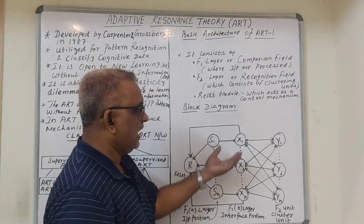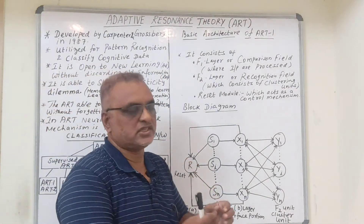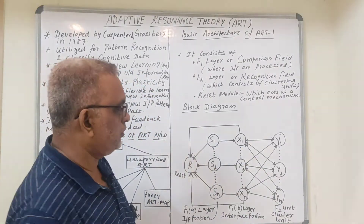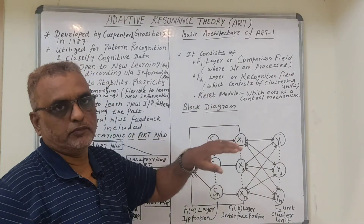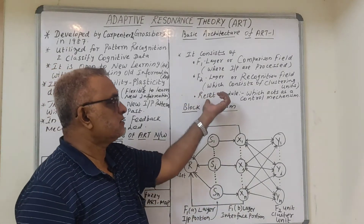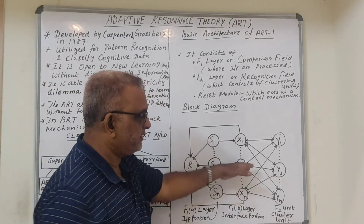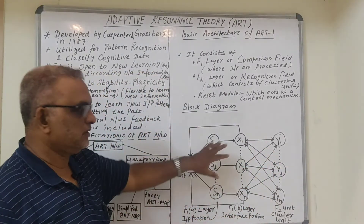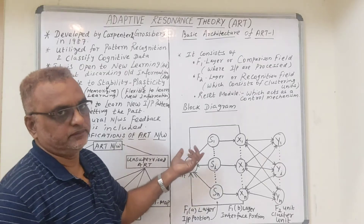The inputs are compared with the clusters in F2, and if the best match is found, that input is connected with the corresponding output pattern or cluster. Otherwise, the reset module performs a control action — it verifies whether the input patterns match the clusters, and if not, it resets the inputs and tries with the next pattern.